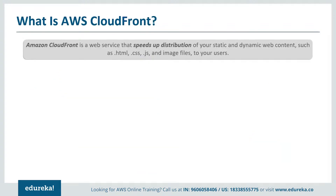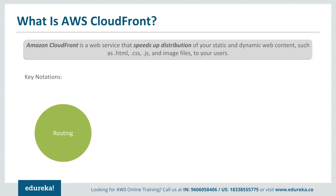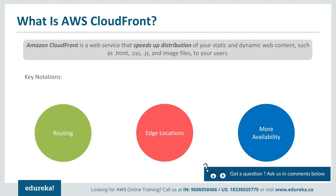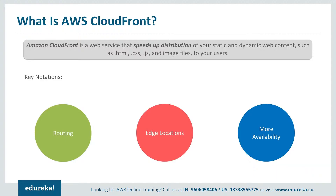So how does AWS CloudFront exactly do it? When you talk about AWS CloudFront, it speeds up the distribution process and you can avail any kind of content — whether static or dynamic — and it is made available to you quickly. CloudFront focuses on three points: one is routing, two is edge locations, and three is the way content is made available to you. When you talk about routing, the data gets delivered to you through a series of networks, and CloudFront ensures there are quite a few edge locations located close to you.